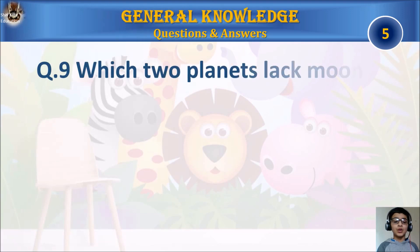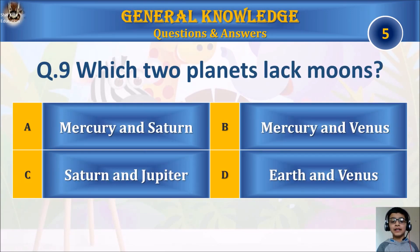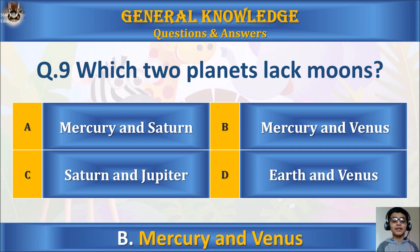Question 9: Which two planets lack moons? A) Mercury and Saturn, B) Mercury and Venus, C) Saturn and Jupiter, or D) Earth and Venus? Your time starts. The answer is B) Mercury and Venus.